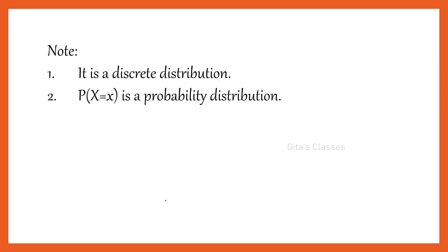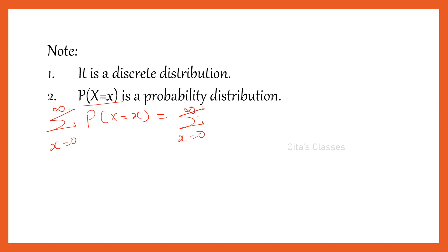Now let us prove that it is a probability distribution. We will say it is a probability distribution if the total probability is 1. We need to show that Σ (X from 0 to ∞) P(X = x) = 1. Substituting: Σ (X from 0 to ∞) e^(−λ) · λ^x / x!. Remember, you write it in the order e^(−λ) · λ^x / x!, which makes it easy to remember.